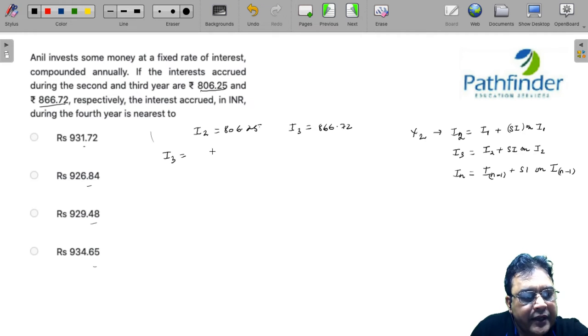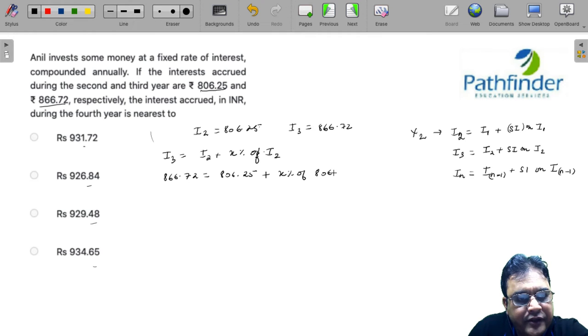We know I3 is equal to I2 plus simple interest, that is x percent of I2 if x is the rate of interest. So what do you have? 866.72 must be equal to 806.25 plus x percent of 806.25. This is something which you should understand.